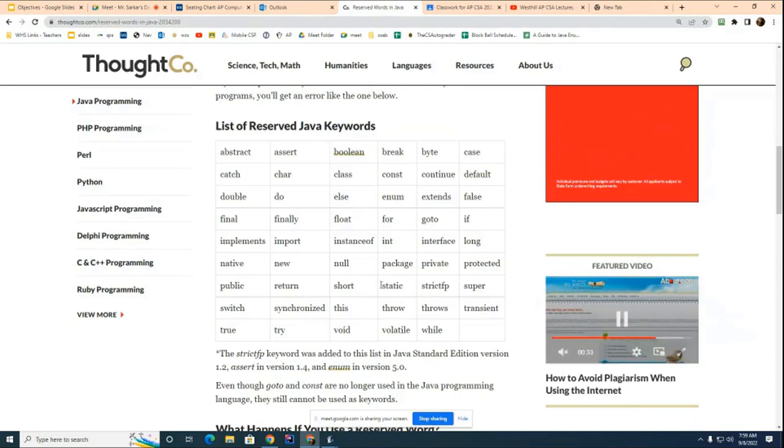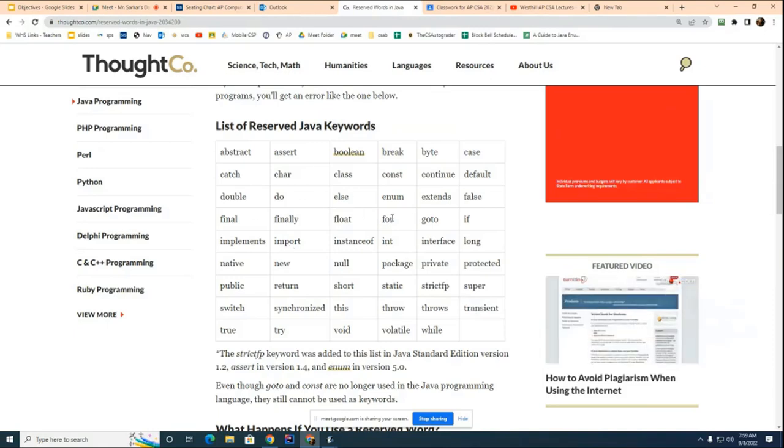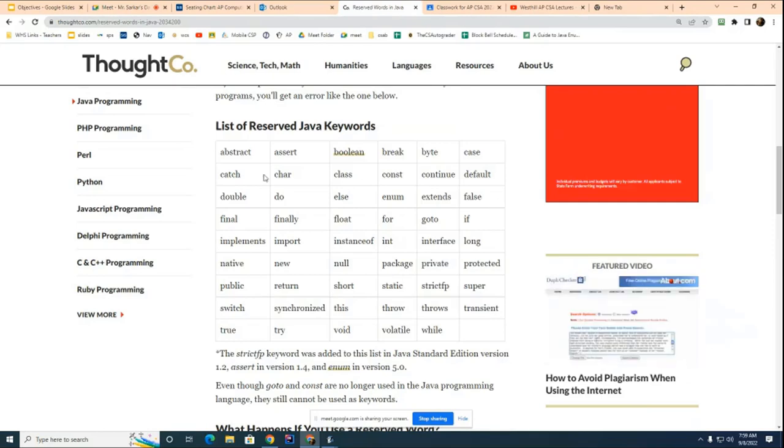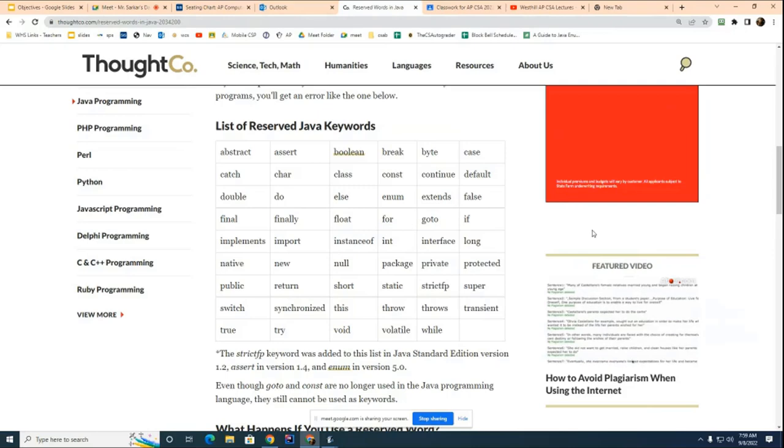So that's a little background task for you and you can find these words pretty much anywhere. I'll try to put a link to them on Google Classroom but if you just look on Google, the 53 reserved words for Java are going to be everywhere for you. Does anybody have any questions about that?